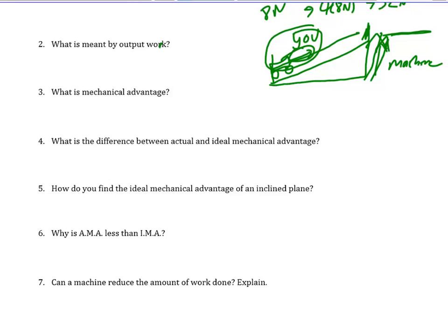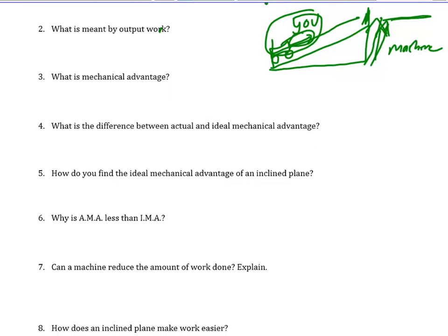Of course, a machine has friction, and that's what number 4 is about. Actual mechanical advantage includes friction — it's what you actually get from the machine. Ideal mechanical advantage is calculated with distances and excludes friction. It's what the machine would do if there was no friction and it was a perfect machine.